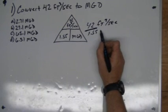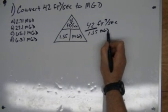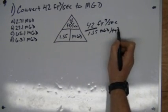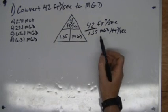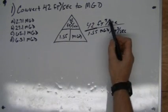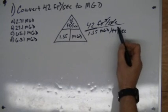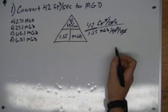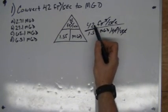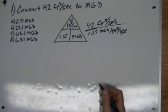And that's going to be MGD per cubic foot per second. These are going to cancel out - seconds, cubic feet - and you end up with MGD: 42 divided by 1.55.